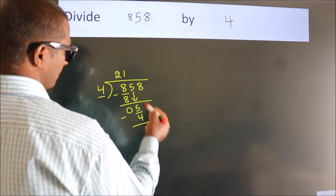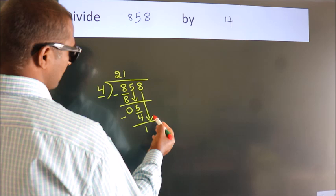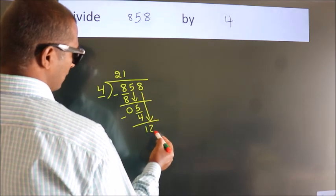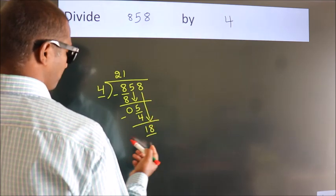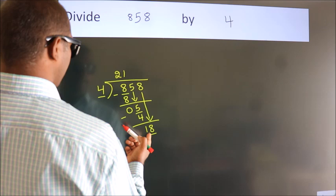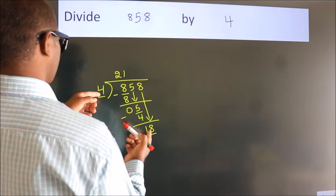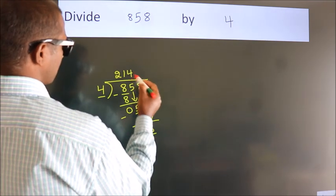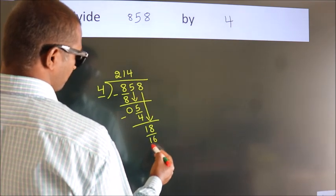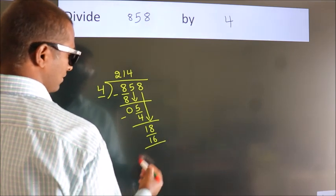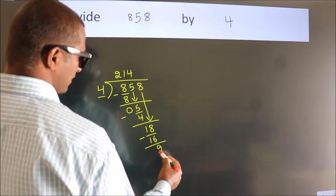After this, bring down the beside number, so bring down 8, making 18. A number close to 18 in the 4 table is 4 fours, 16. Now we subtract and we get 2.